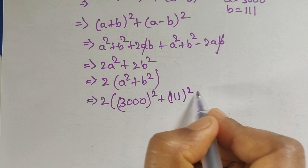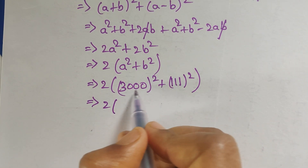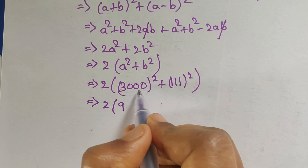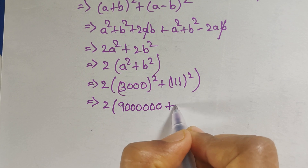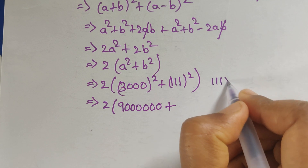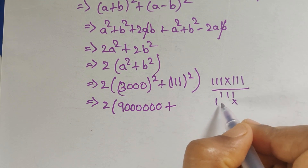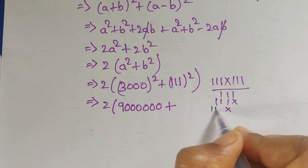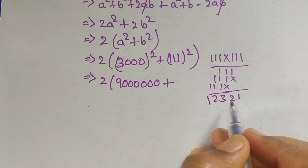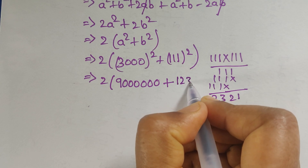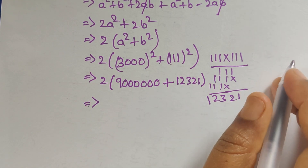3000² = 3² followed by six zeros = 9,000,000. And 111² = 12,321. So 3000² + 111² = 9,000,000 + 12,321 = 9,012,321.